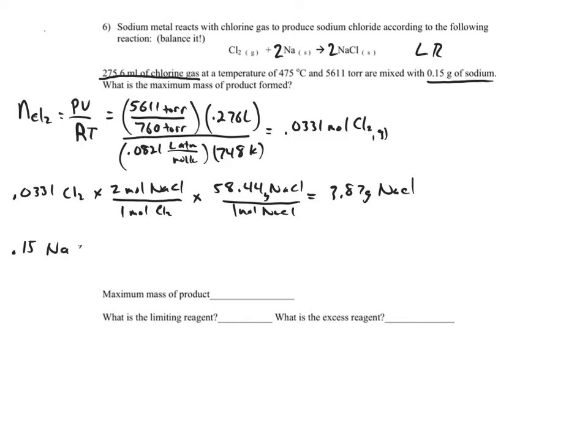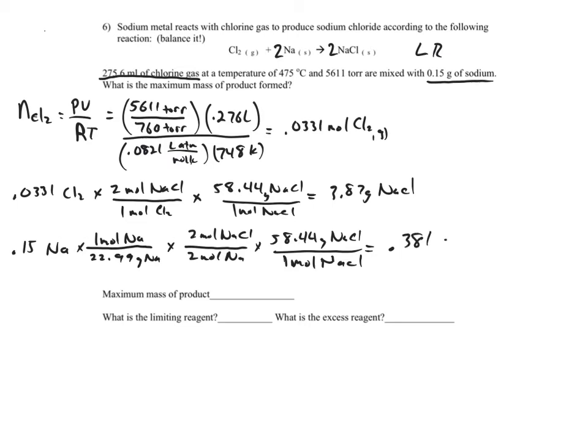We're going to do the same thing with sodium. Given the mass, we're going to change it to moles. It's not going to obey the gas laws, and change it to grams. We see that this is 0.381 grams of NaCl, so that's what's actually going to be produced.